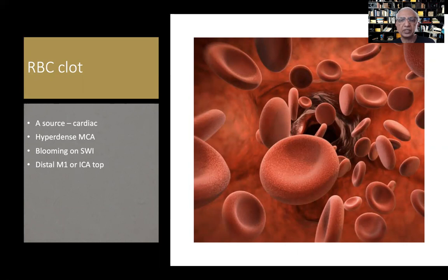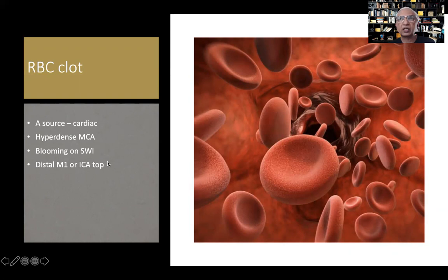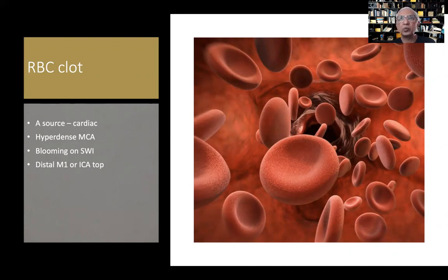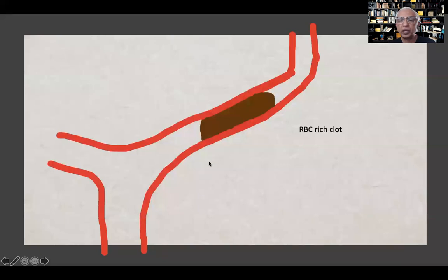How do you suspect an RBC clot? You need a source — most commonly cardiac, a patient with an LV clot or atrial fibrillation. On CT look for a dense MCA; on MR this is represented as blooming on SWI. Because it's a clot, it invariably gets held at the point of bifurcation — usually at the ICA top or in the distal M1 segment. Sometimes a combination exists: what starts as an AF clot will also accumulate red clots beyond it.